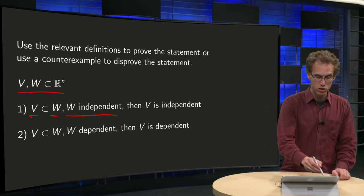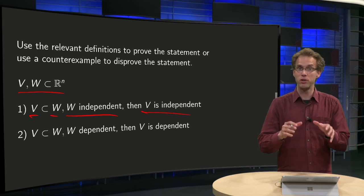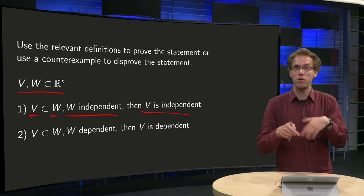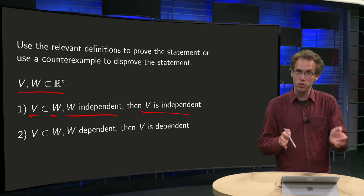and then we have to show that the smaller set is independent as well, so you pick a big set, independent, pick some vectors of them, and you have to show that the smaller set is also independent.